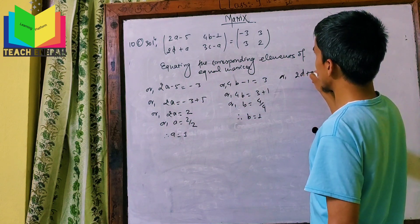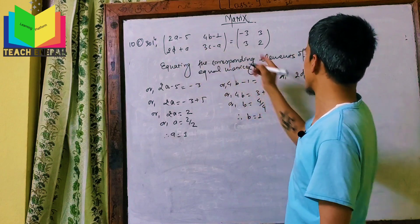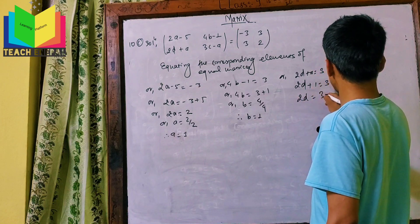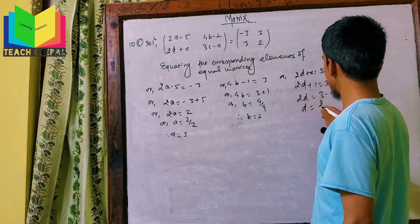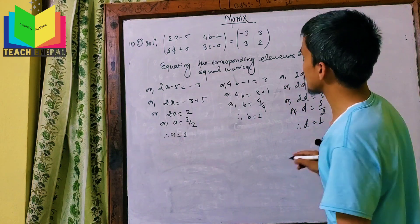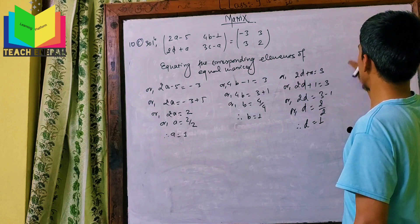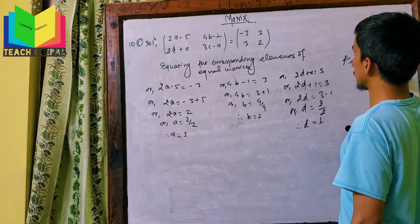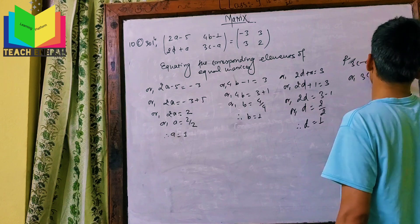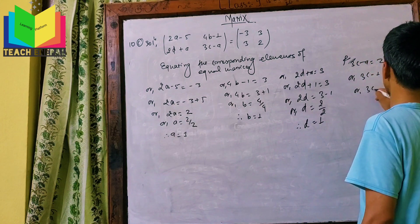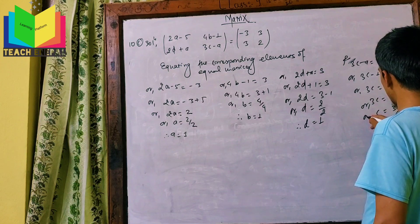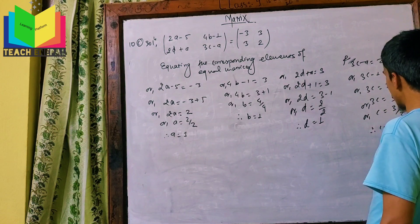From 2D+A equals 3: since A equals 1, we get 2D+1 equals 3, so 2D equals 2, therefore D equals 1. From 3C-A equals 2: 3C-1 equals 2, so 3C equals 3, therefore C equals 1.